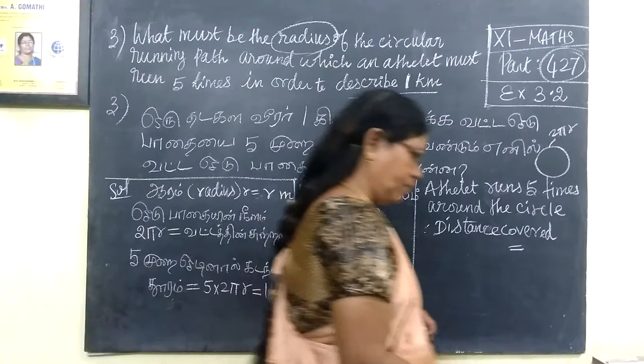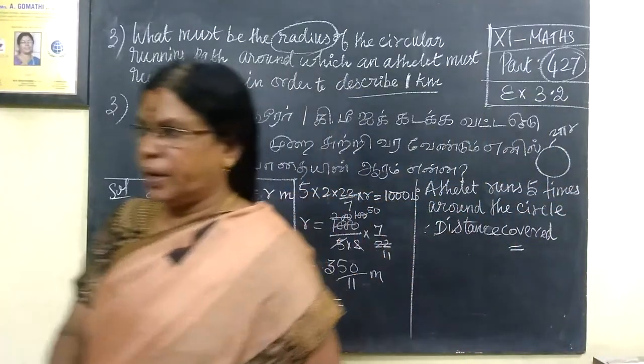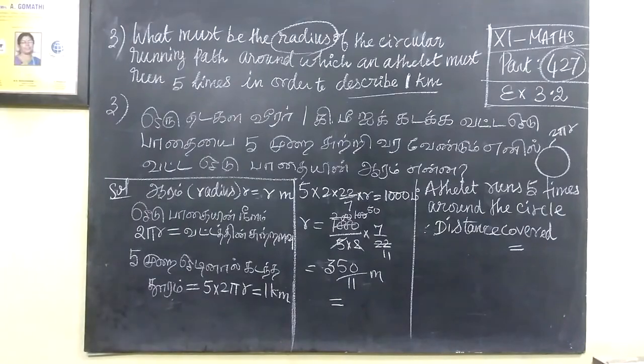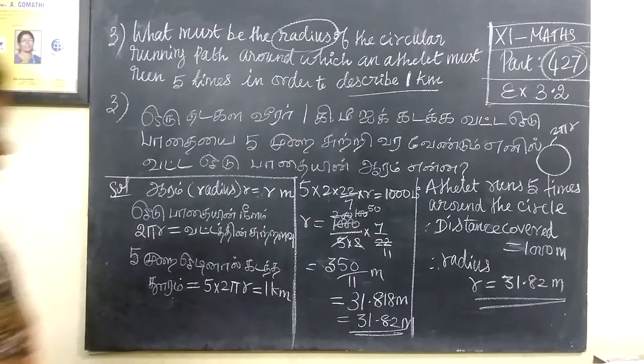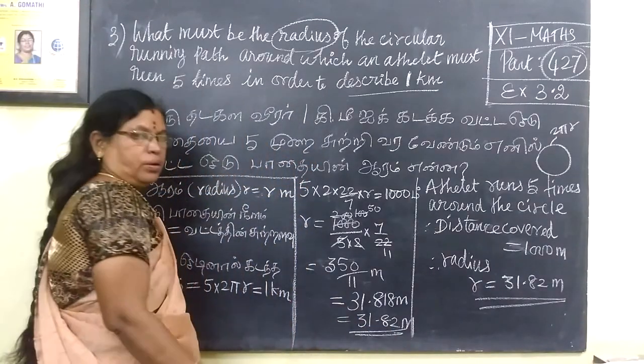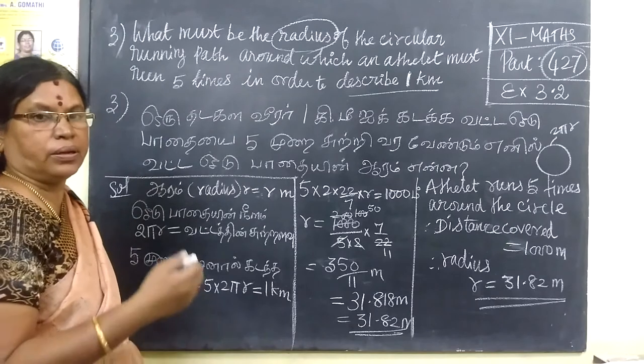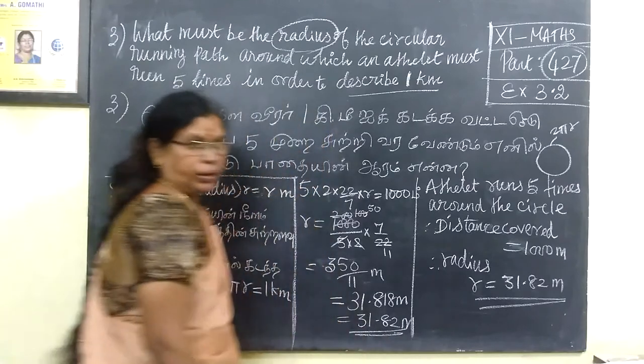So 350 by 11, the answer for this is 31.81 meter. So the radius, R equal to 31.82 meter. Right.